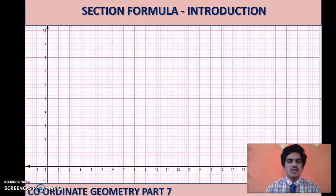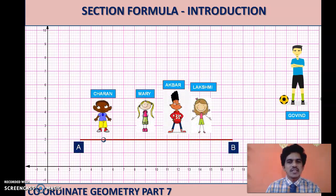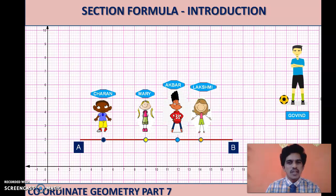Now let us come back to coordinate geometry. Here we have a school where a physical education teacher named Govind is present. He took the students to the ground for a practice session. Four students participated and he made them draw line AB and stand at different positions. The names of the four students are Charan, Mary, Akbar and Lakshmi, each position denoted by a point on the line.